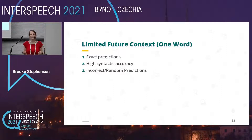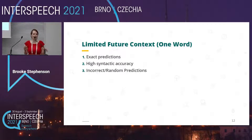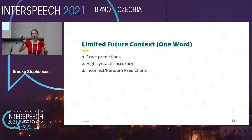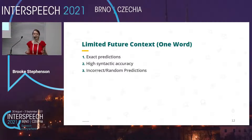With this in mind, we decided to limit the future context to a single word. This way we can study the effects of three different categories of future predictions: the first being exact predictions; the second, those that are not exact but with high syntactic accuracy, where the part of speech of the ground truth next word matches the predicted next word; and the third being completely incorrect or random predictions.